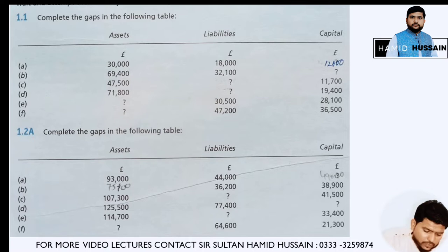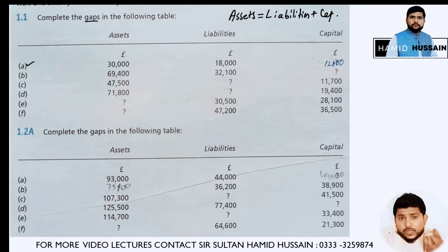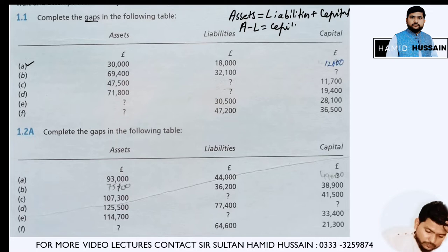The first question is that you have assets of 30,000 and liabilities of 18,000. As we know, the basic accounting equation is: assets equals liabilities plus capital. To find out capital, you need to subtract liabilities from assets. So 30,000 minus 18,000 gives us capital of 12,000.